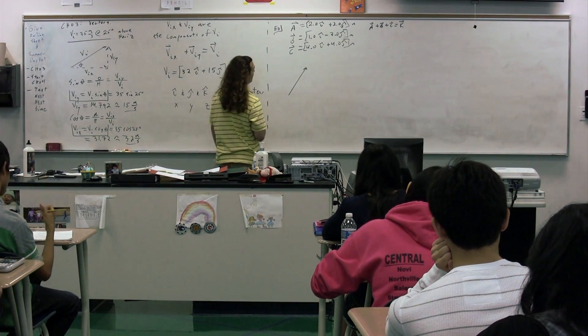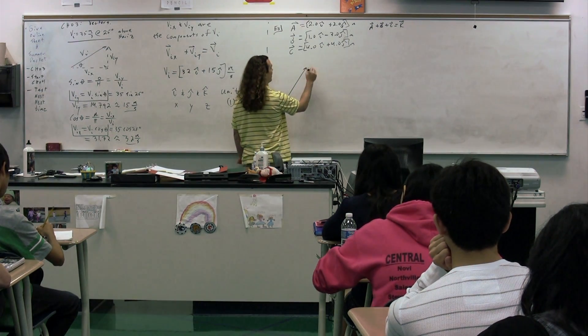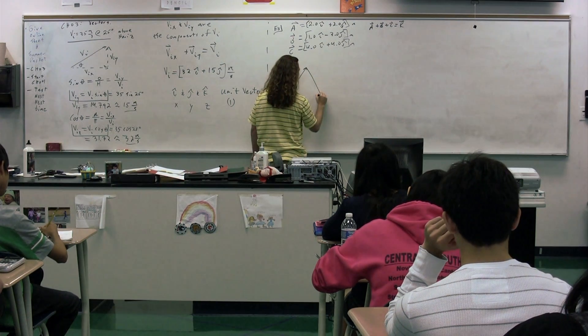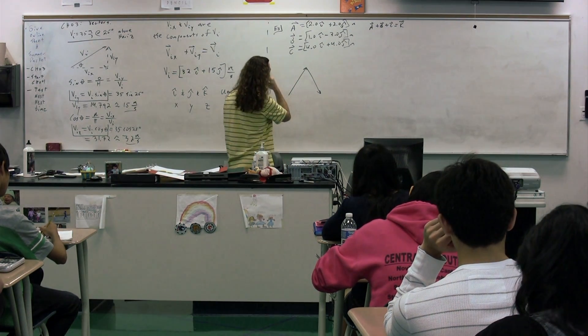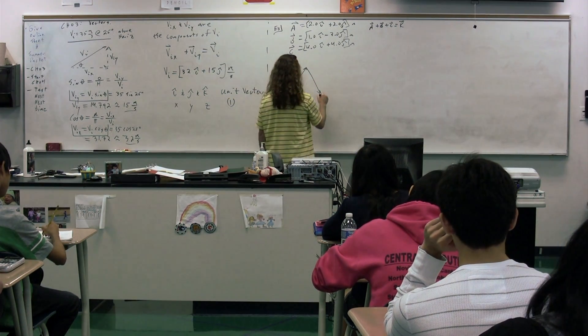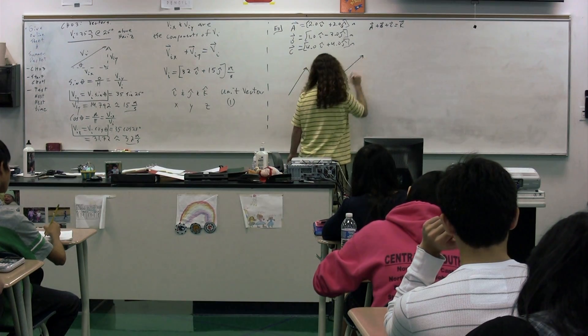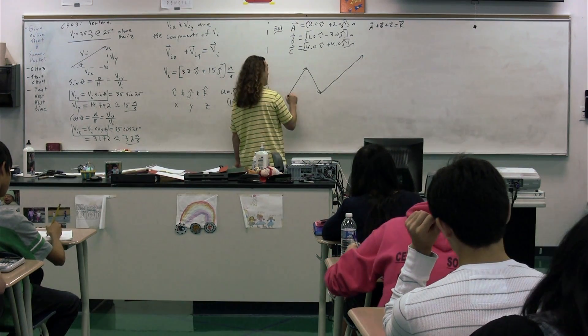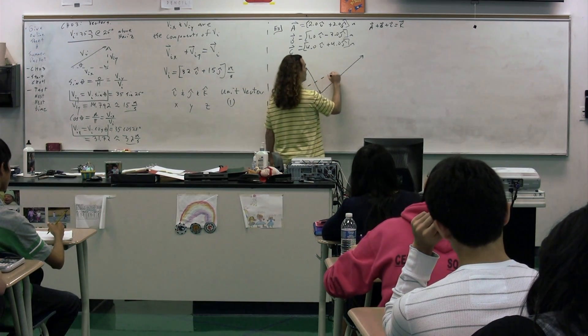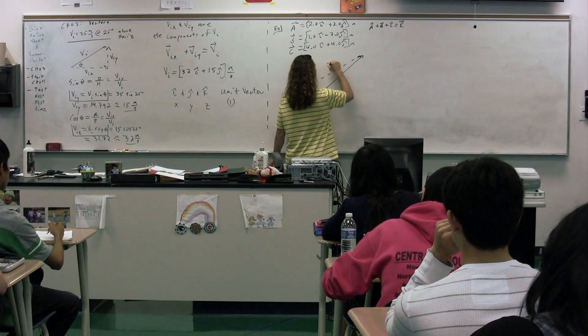A would look like this. B is 1, negative 3, so it would look something like this, perhaps. And then C is 4 and 4, so it's going to be much longer and supposed to be in the same direction as A. And we could get our resultant vector, which would be this vector right here.